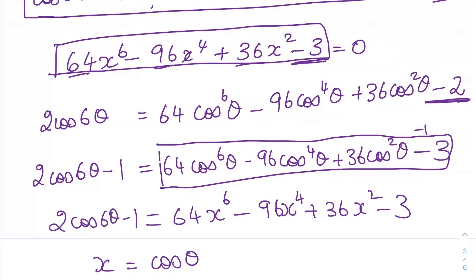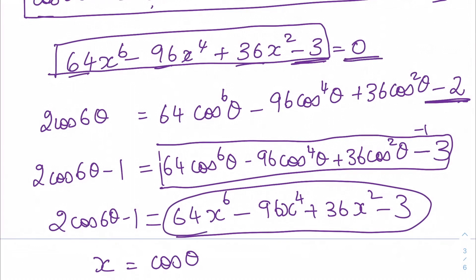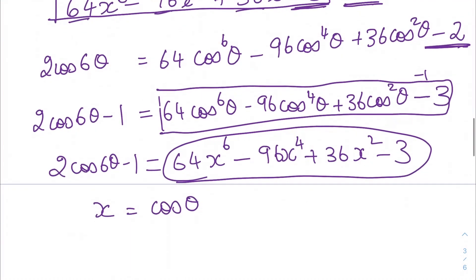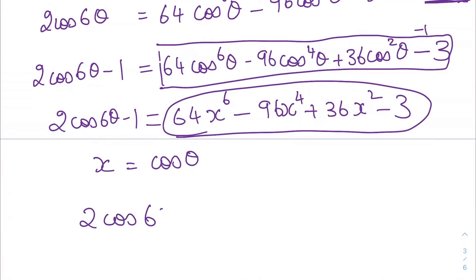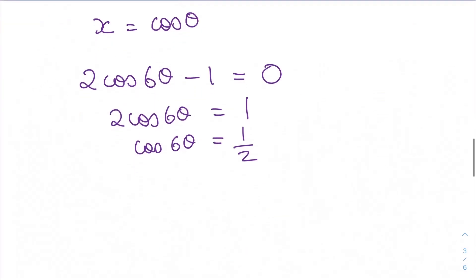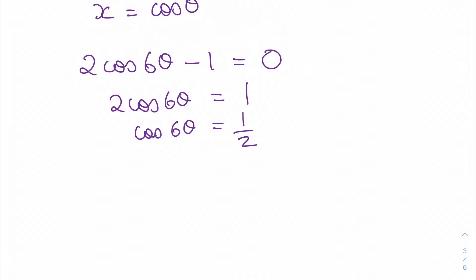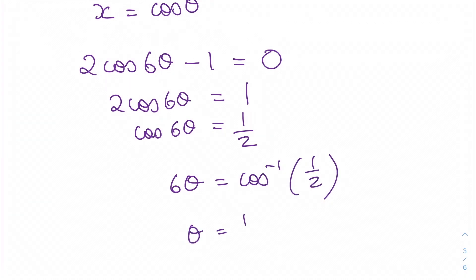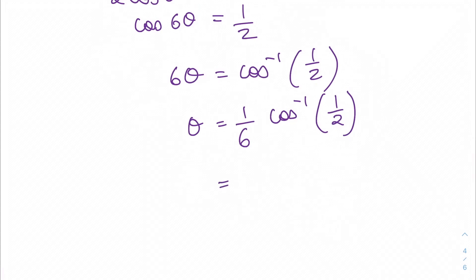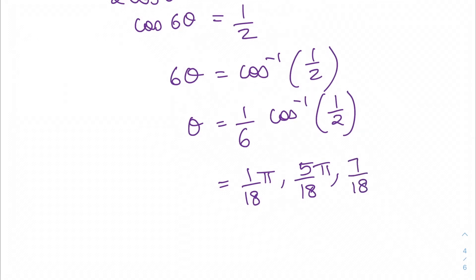This can be replaced with 0, which is what my equation equals. So I get 2cos 6θ − 1 = 0, therefore 2cos 6θ = 1, and cos 6θ = ½. Solving this: 6θ = cos⁻¹(½), and θ = (1/6)cos⁻¹(½). This gives values for θ as π/18, and 7π/18, etc.